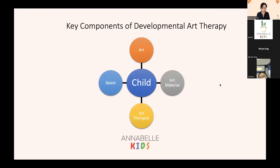This diagram shows the key components in art therapy. As you can see, the child is at the right center of this dynamic — it is child-led, and all of the other elements are there to facilitate a therapeutic relationship where the child feels most safe and secure, be it art, space, material, and art therapy. We are to ensure that the space is conducive for a child to engage in creative expression without the fear of being judged or criticized.